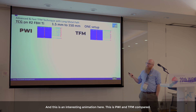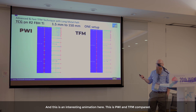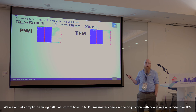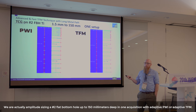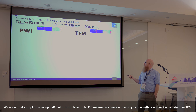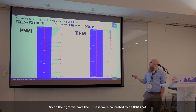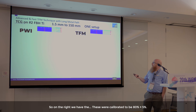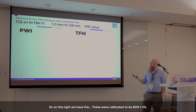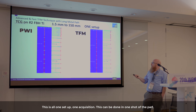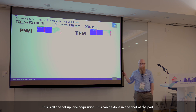This animation compares PWI and TFM. We are amplitude-sizing a number two flat bottom hole up to 150 millimeters deep in one acquisition with adaptive PWI or adaptive TFM. These were calibrated to 80% plus or minus 5%, showing the amplitude at each one of these number two flat bottom hole reflectors. This is all one setup, one acquisition — this could be done in one shot of the part.